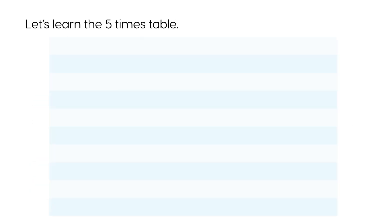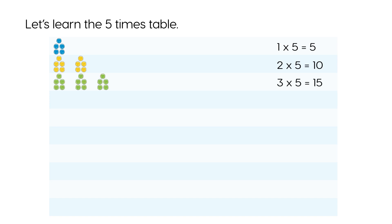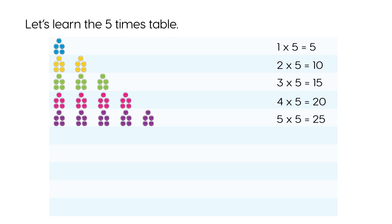Let's learn the five times tables. One times five is five. Two times five is ten. Three times five is fifteen. Four times five is twenty. Five times five is twenty-five.